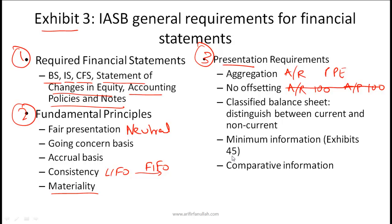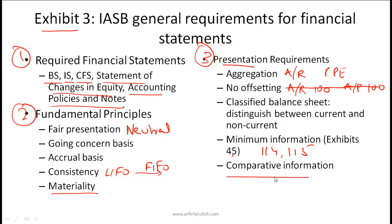Minimum information refers to certain minimum information that must be presented in the financial statements — I would strongly encourage you to study Exhibits 4 and 5 in the curriculum on pages 114 and 115. Comparative information means the information presented in financial statements should allow you to compare across time periods and across companies, but for a given company, comparing across different time periods is what is most critical.